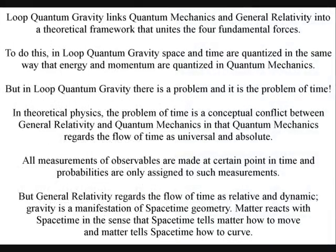But in quantum loop gravity, there is a problem, and it is the problem of time. In theoretical physics, the problem of time is a conceptual conflict between general relativity and quantum mechanics, in that quantum mechanics regards the flow of time as a universal absolute. All measurements of observables are made at certain points in time, and probabilities are only assigned to such measurements.